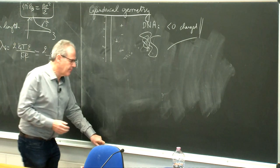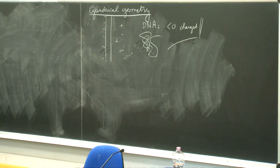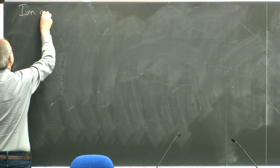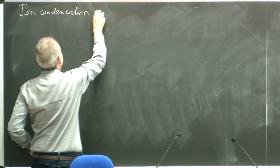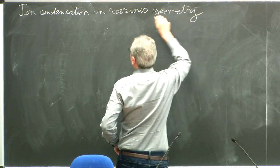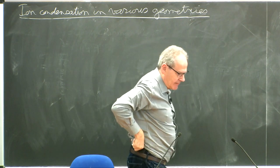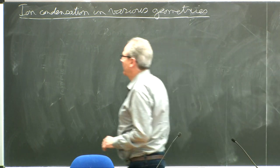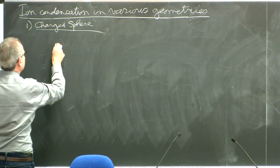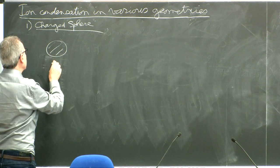I want to discuss rapidly a qualitative discussion of ion condensation in various geometries. The first geometry is the charged sphere. Assume you have a charged sphere with a certain charge Z minus, or with a charge Q minus. This charge is fixed, and then I put a charge plus E floating around.